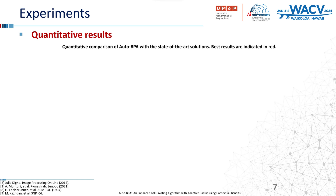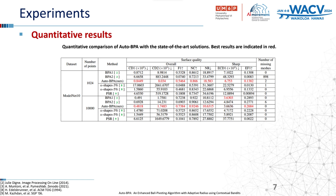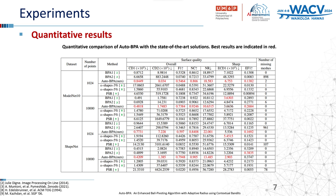To validate the effectiveness of our proposed approach, we conduct a comparative study involving Auto-BPA, empirically radius-based BPA, and classic methods such as Poisson surface reconstruction and alpha shapes. We employ two datasets — ShapeNet and ModelNet — with both low and high point cloud densities. The results demonstrate that our approach, Auto-BPA, significantly outperforms the other baselines for both low and high densities.